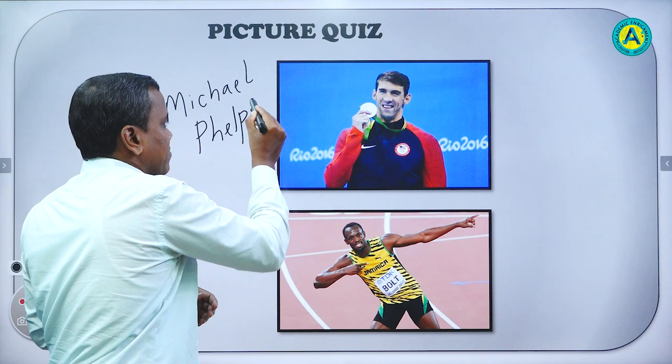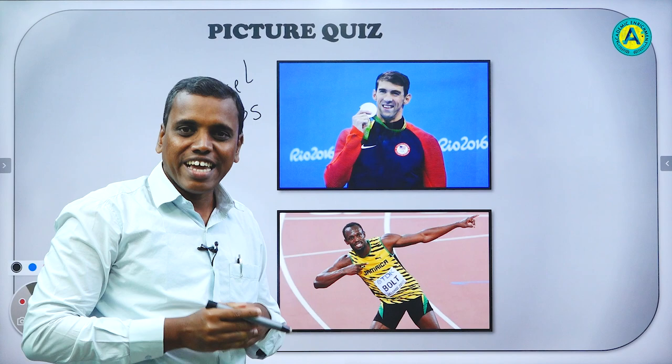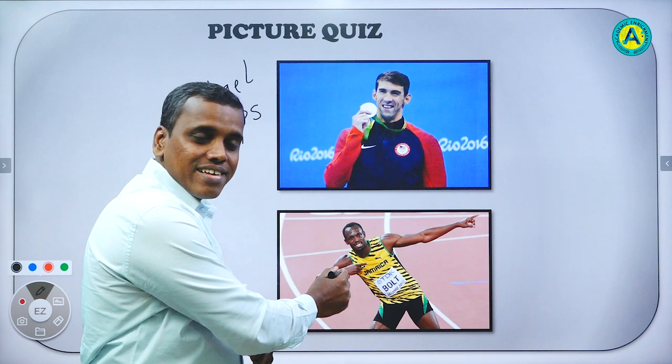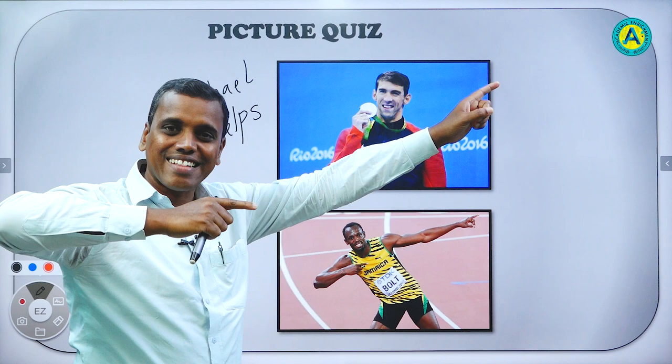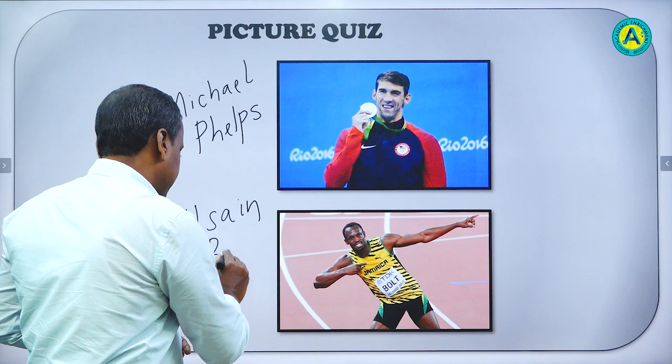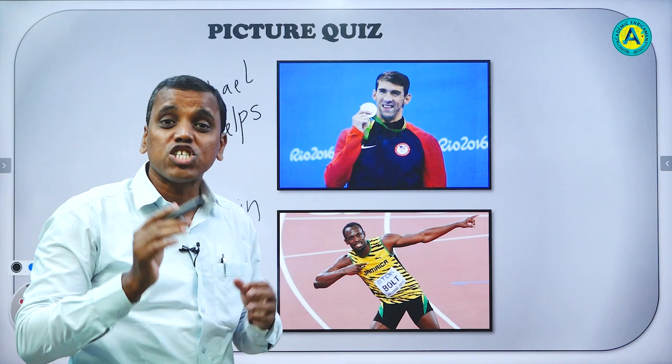Can you guess how many gold medals he has won? He has won 23 gold medals. Can you believe it? He alone has won 23 gold medals. And look at the second picture. He is very famous for his action like this. He is Usain Bolt. He has also won 6 gold medals in the Olympic games.